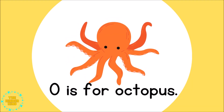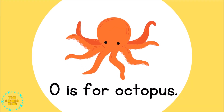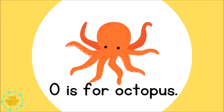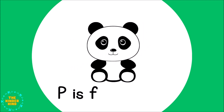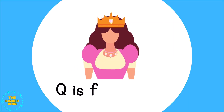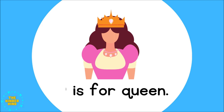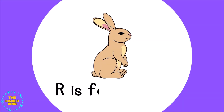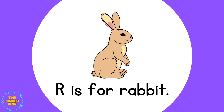O is for Octopus. O O Octopus. P is for Panda. P P Panda. Q is for Queen. Q Q Queen.